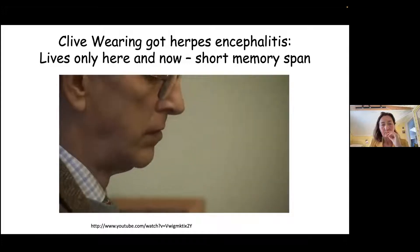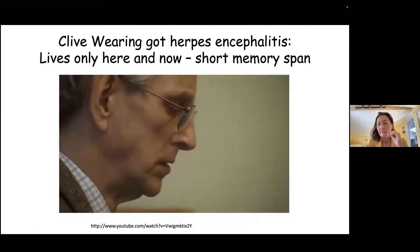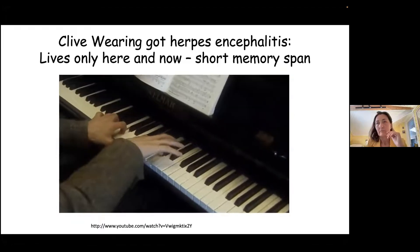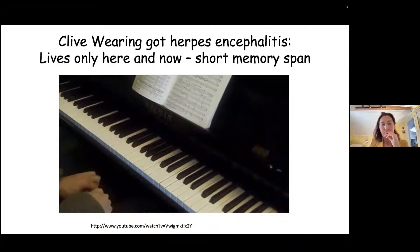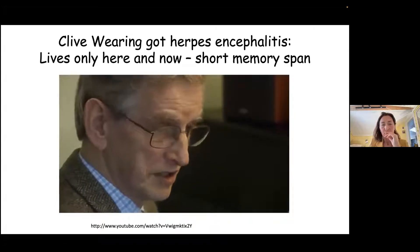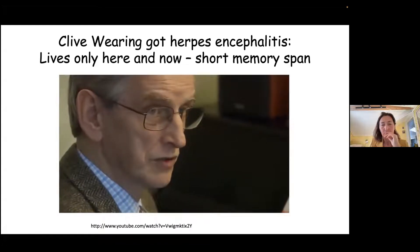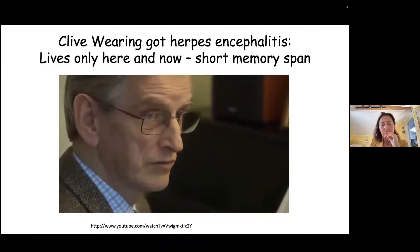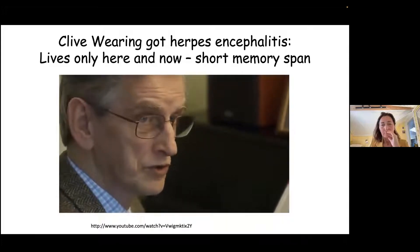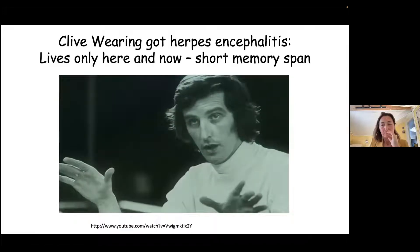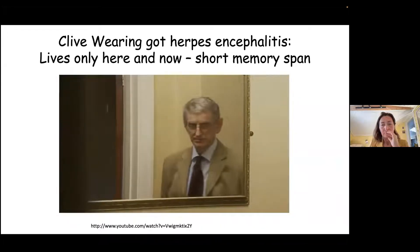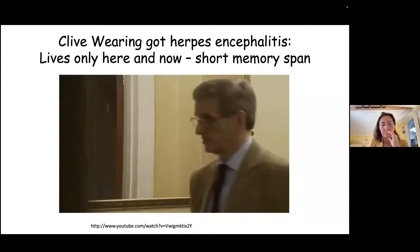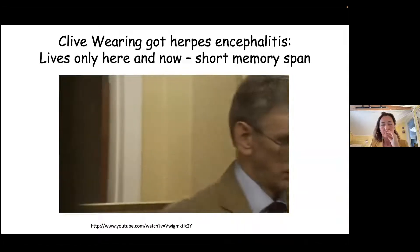Clive Wearing has one of the worst cases of amnesia in the world. He was a renowned conductor living in London when he was struck down by a virus in 1985. Parts of his brain were completely destroyed, including his memory. However, his ability to play music is unaffected.